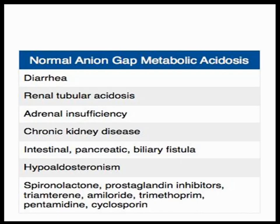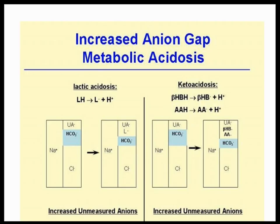For normal anion gap metabolic acidosis, consider causes like diarrhea, renal tubular acidosis, and adrenal insufficiency. Importantly, chronic kidney disease causes normal anion gap metabolic acidosis, but a patient with acute kidney injury or renal failure will develop a high anion gap metabolic acidosis because of uremia.